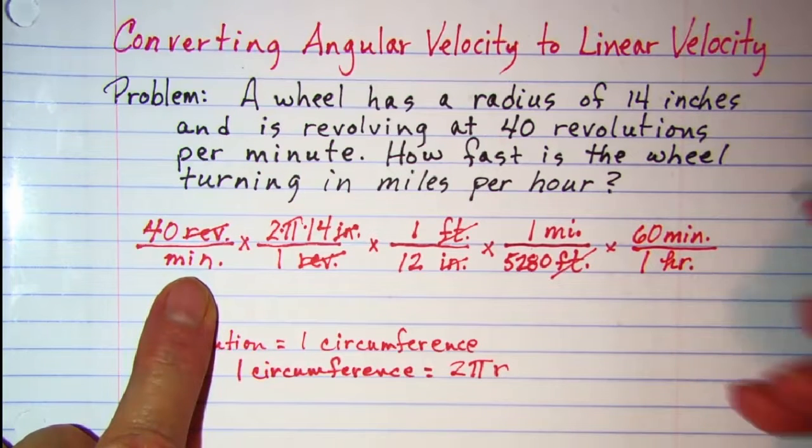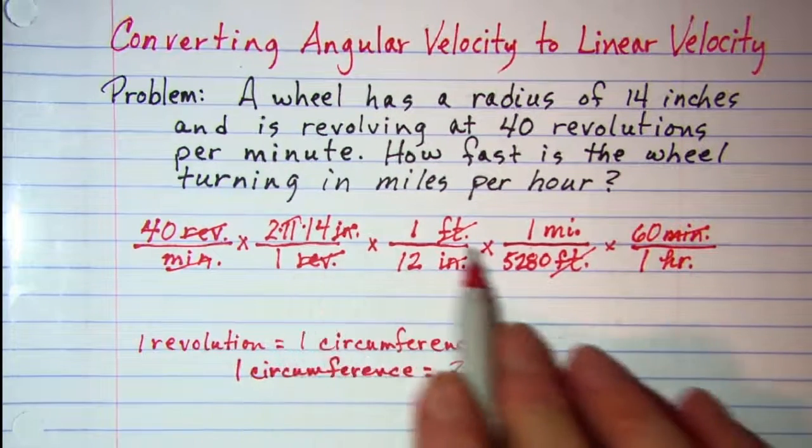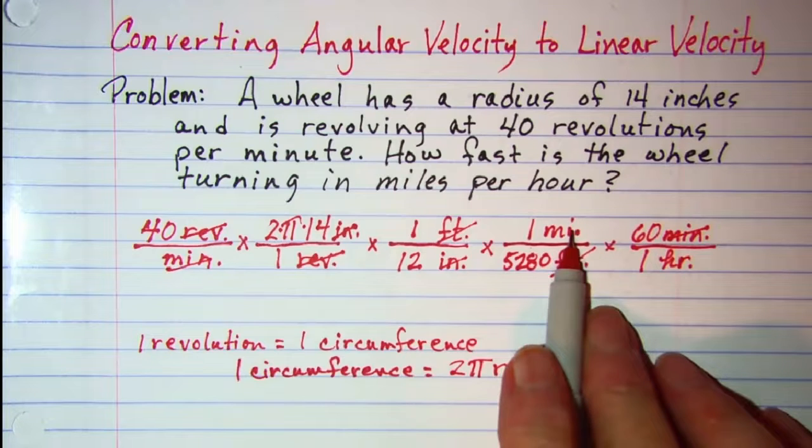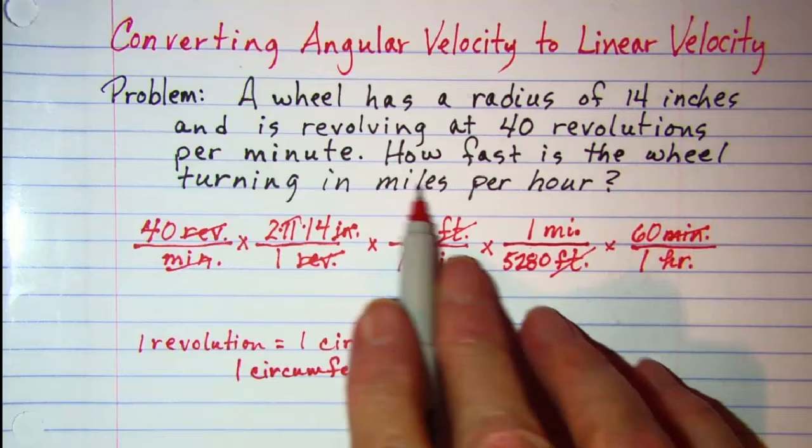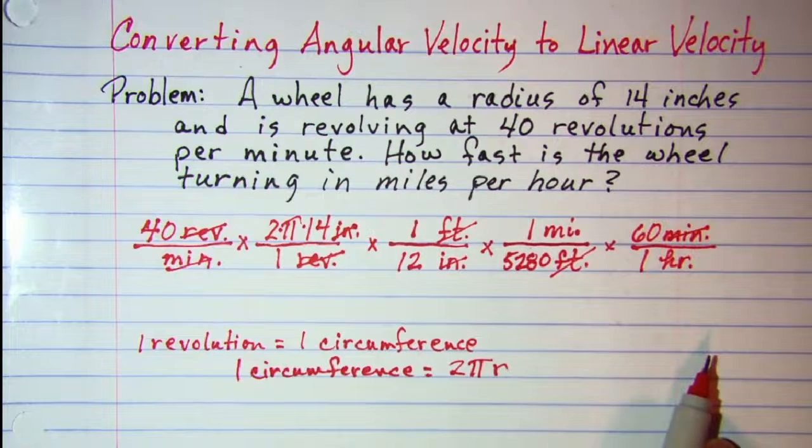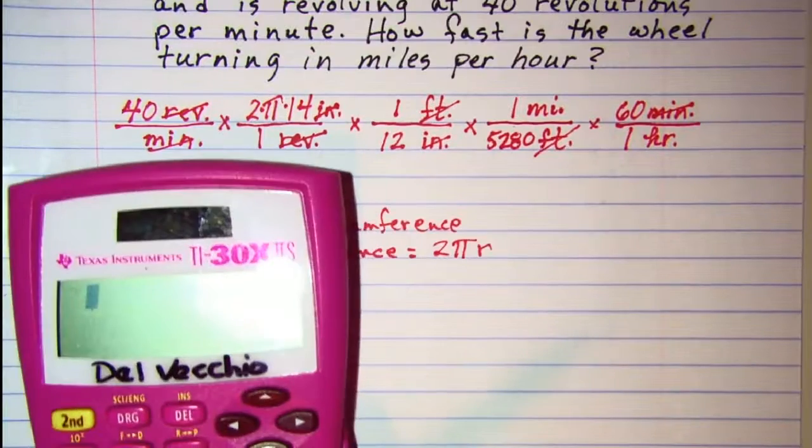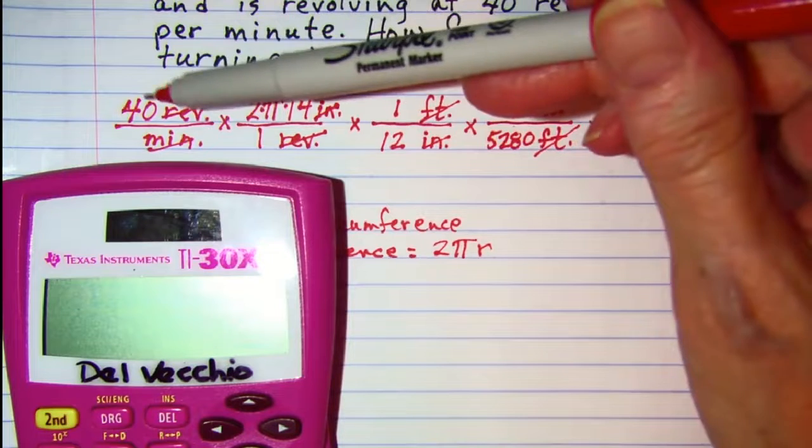So 60 minutes equals one hour and now my word minutes cancels here and here and I'm now in miles per hour which is what my problem asked for. How fast is the wheel turning in miles per hour? Now we just need to multiply all the things in the numerator.